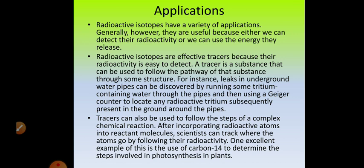Tritium is the H-3 isotope — there are three isotopes of hydrogen, and H-3 is tritium. Tritium water is passed into the pipelines, and if there is leakage, you will be able to detect the tritium in the ground around the pipeline. Use a Geiger-Müller counter to search for the presence of tritium in the ground. If you find tritium in the groundwater, that means the pipe has a leakage. This is how a tracer can be used to follow the pathway of that substance.